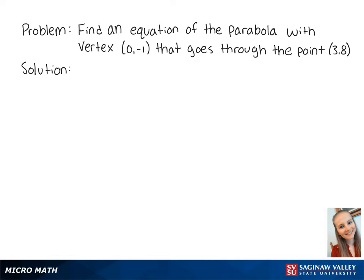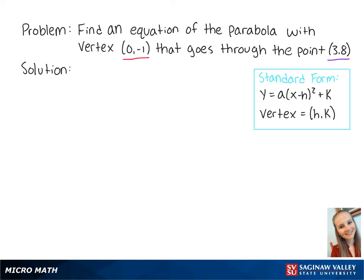For this problem, we want to find the equation of the parabola with vertex (0, -1) that goes through the point (3, 8). We're going to use standard form to plug in the point of the vertex and then solve for a.